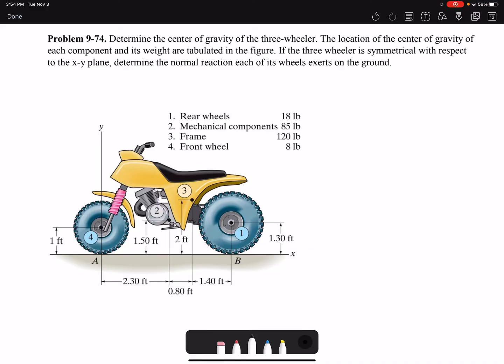So the problem has two components. In the first component we want to find the center of gravity. In the other component we want to have the normal reaction of the wheels.